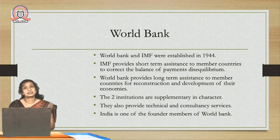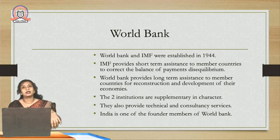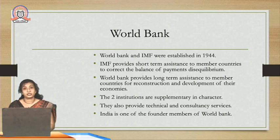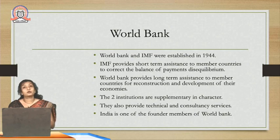World Bank and IMF were both established in the year 1944. These two institutions came into existence in 1944 when all the countries met at a place known as Bretton Woods. In this Bretton Woods agreement, it was decided that two institutions will be formed which will provide financial assistance to all the countries. This was basically after the Second World War. All the countries were facing financial crunch; some countries were completely destroyed. So it was very important that countries would be rehabilitated and redeveloped, and in that effort World Bank and IMF both came into existence.